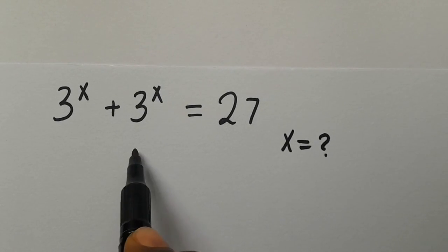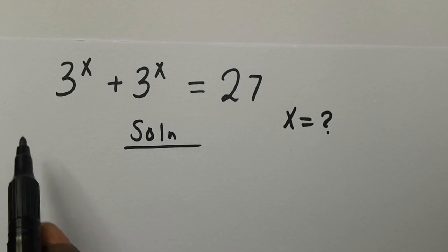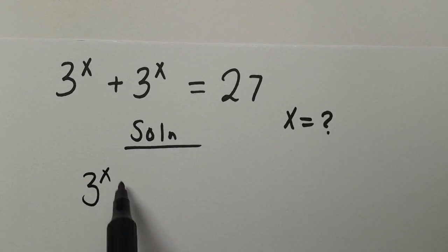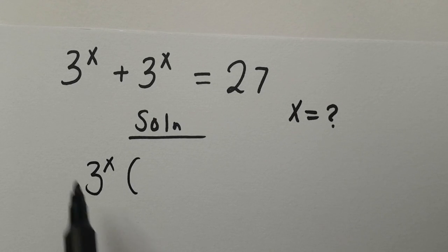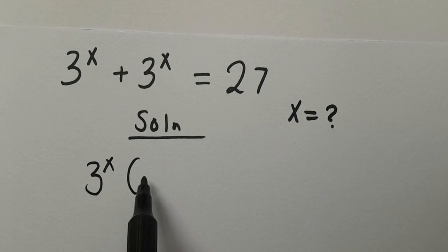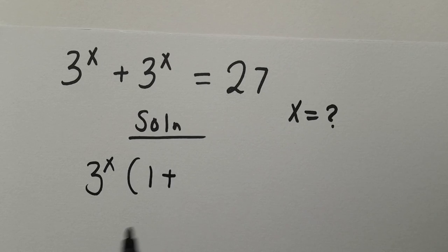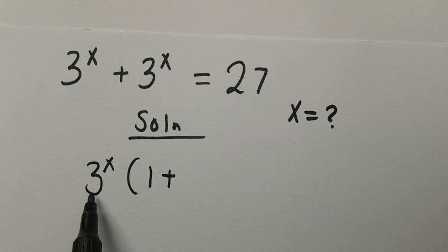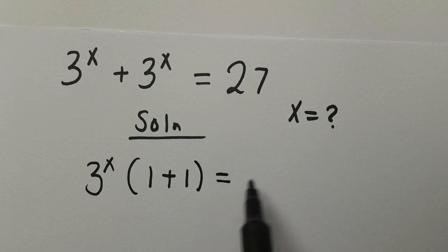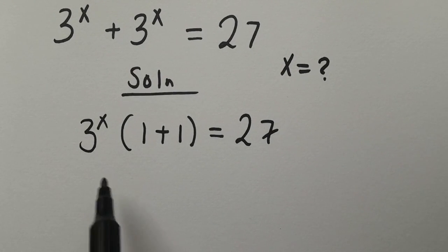Let's have its resolution. We have 3 to the power of x in common, so we can factor it out. We open the bracket: 3 to the power of x divided by 3 to the power of x gives 1, plus 3 to the power of x divided by 3 to the power of x, which is also 1, equals 27.